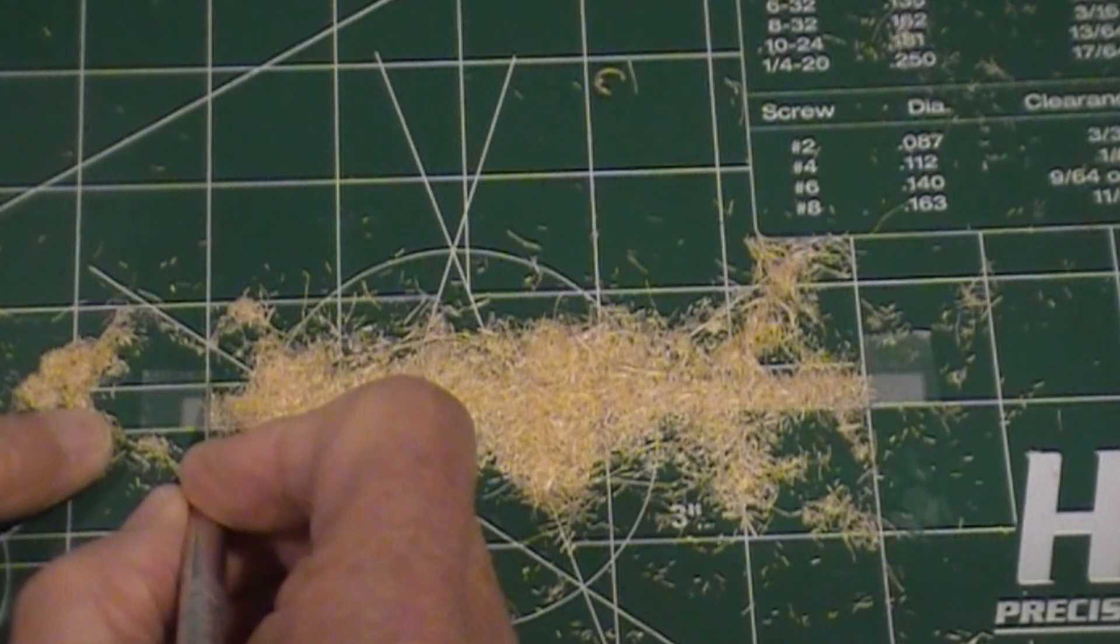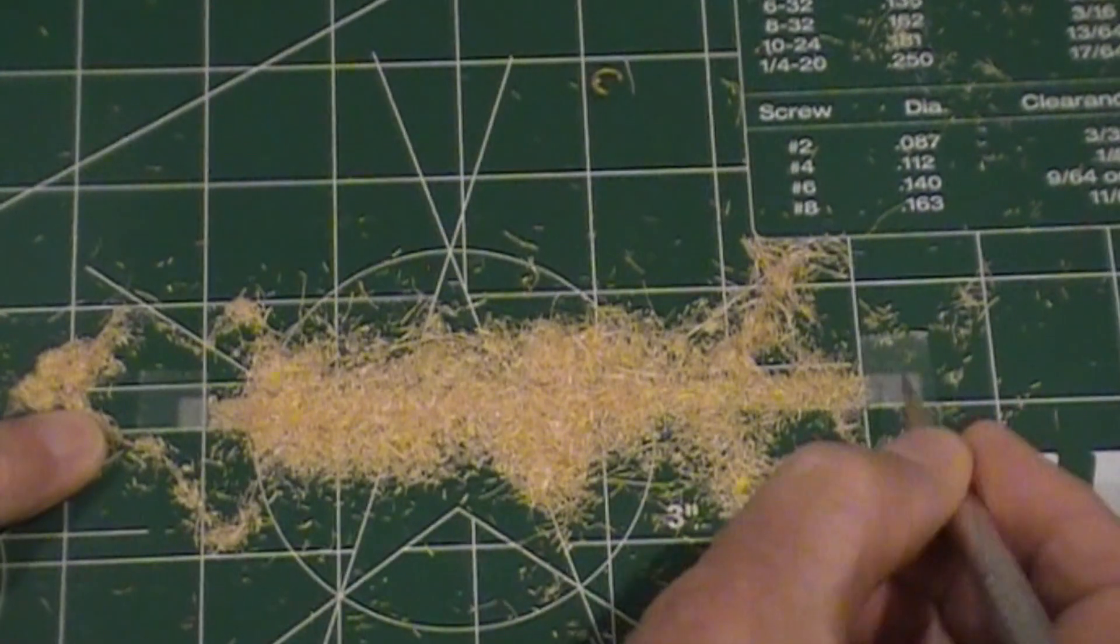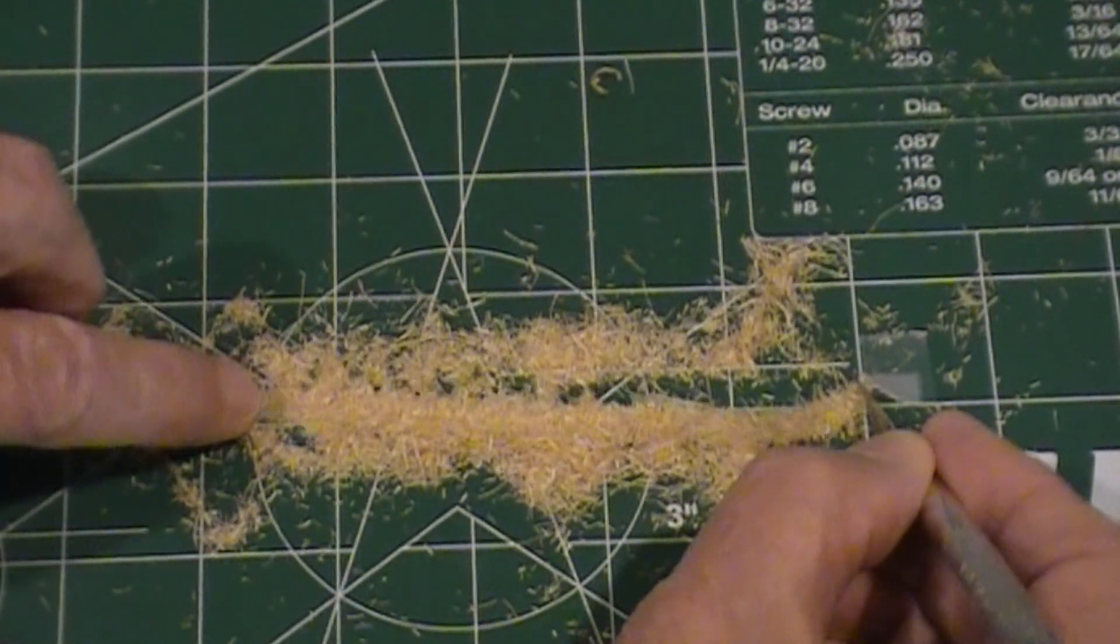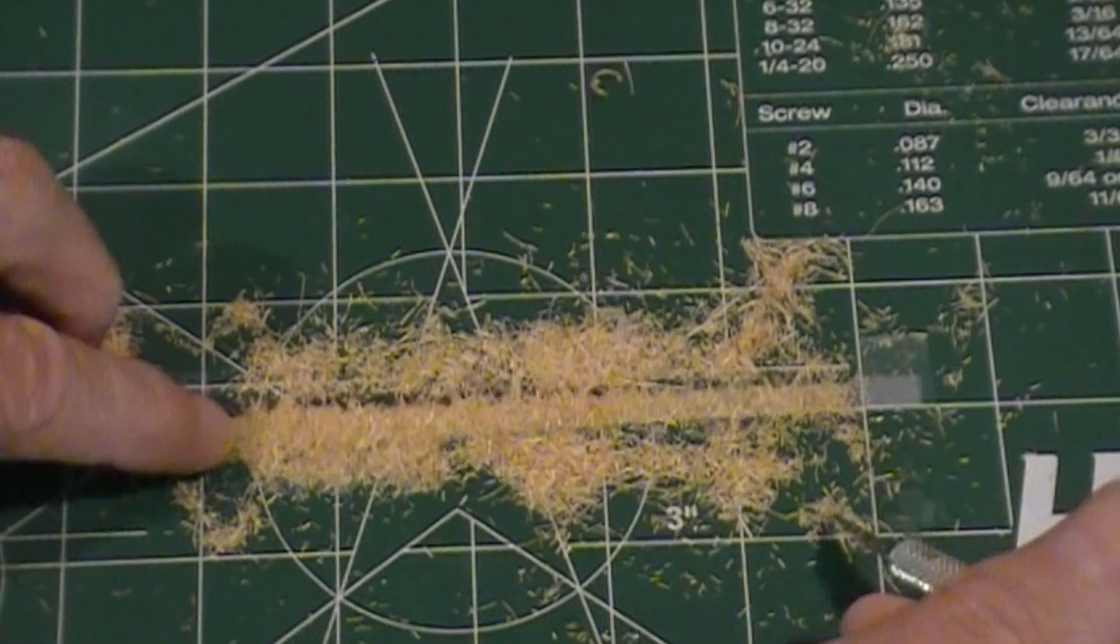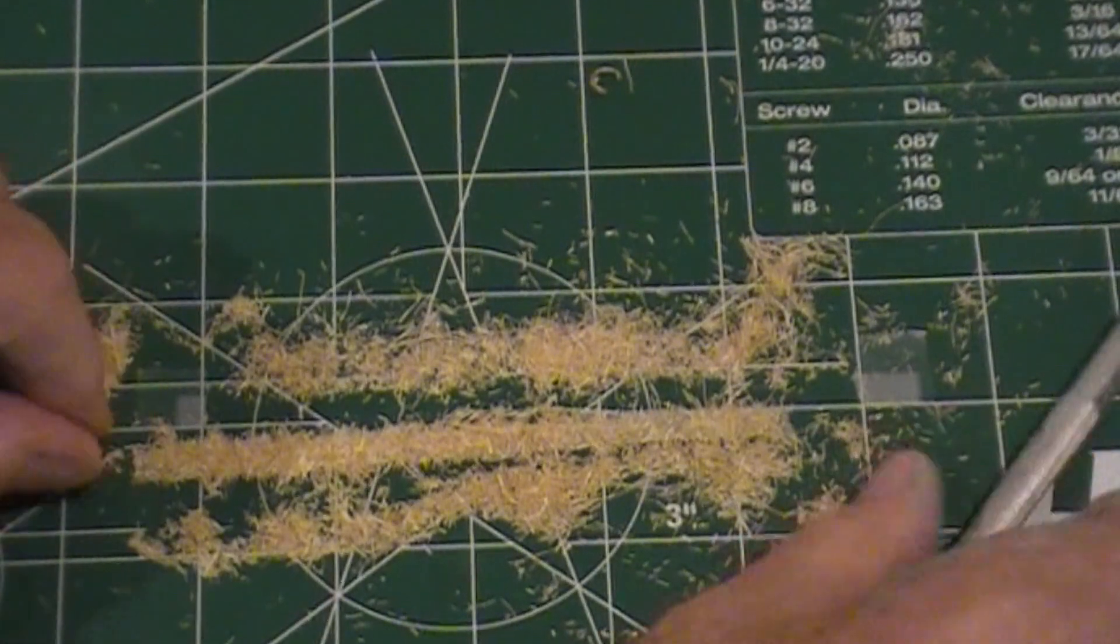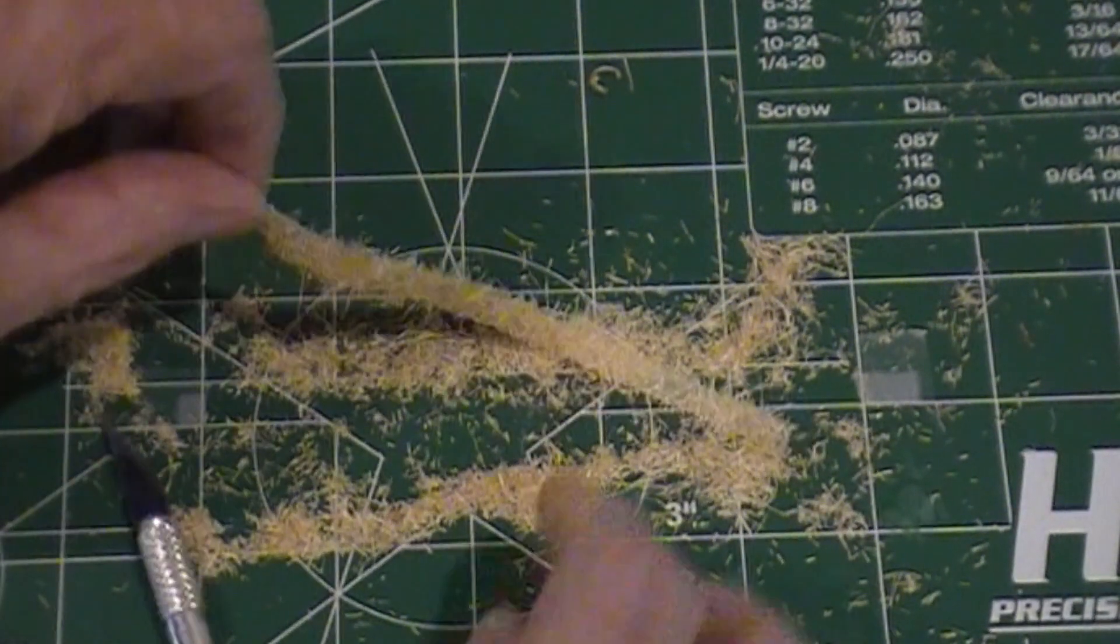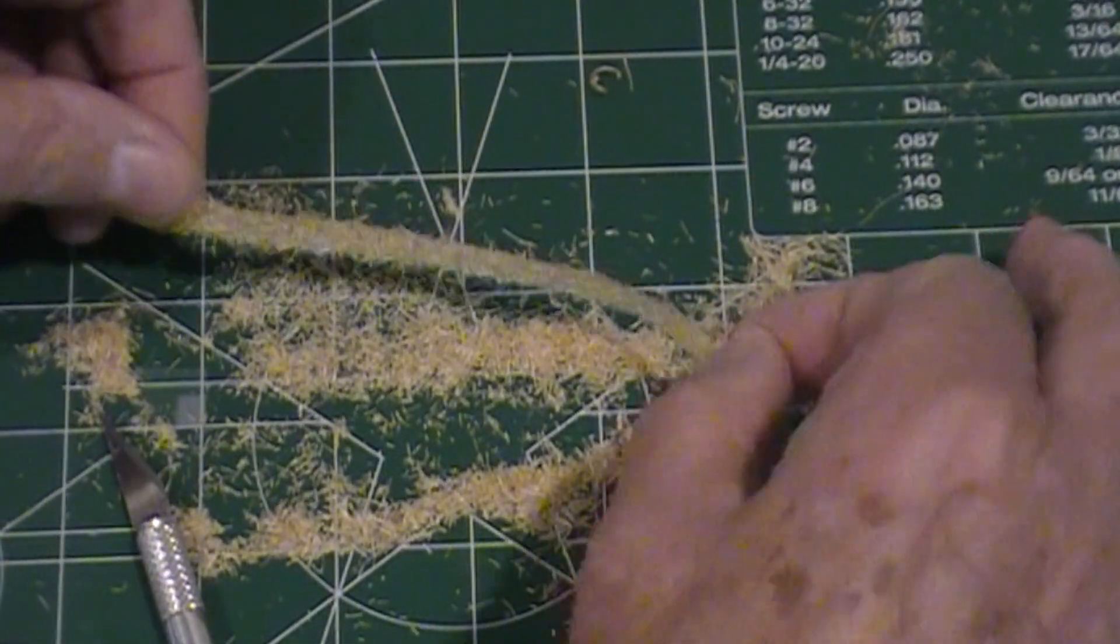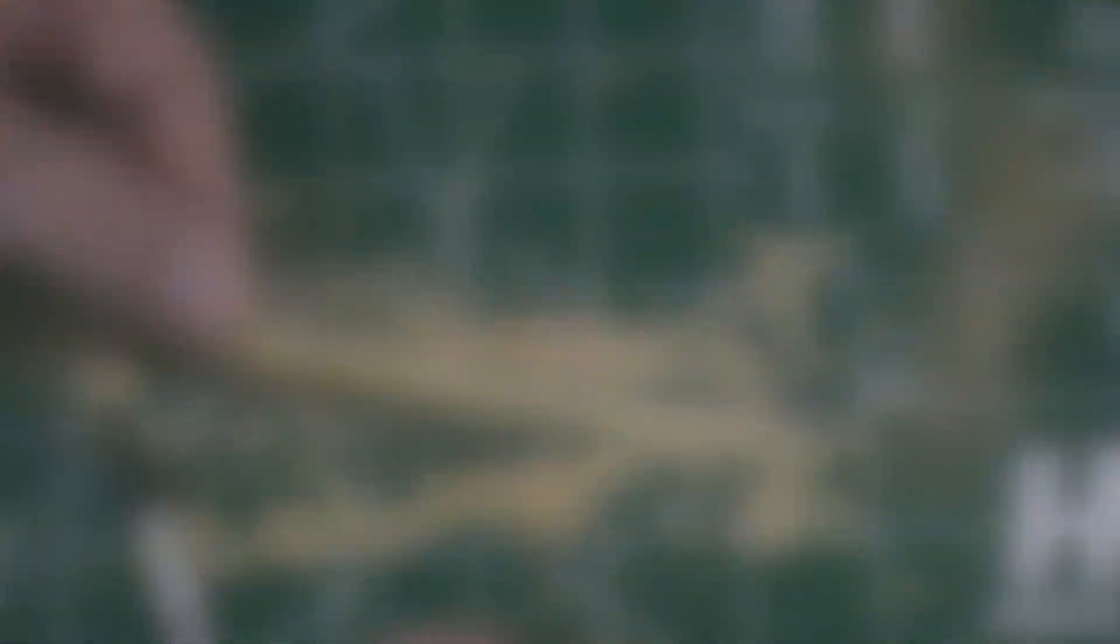I use my exacto knife here to kind of trim this section away, and this one down here. Let's hold this end. And here is our area that we're going to roll up and make a hay bale out of.